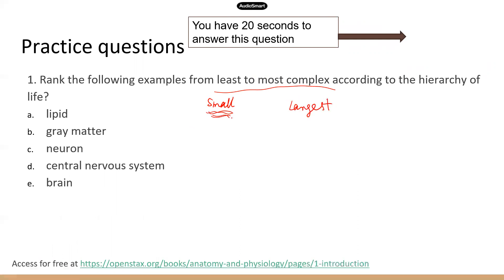The smallest component is going to be the macromolecules — the chemicals that make up things. Which of the following is an important macromolecule? That's the lipid, so A is going to be the first. Different macromolecules form cell parts, and cell parts form a cell. Which one is a cell? That's the nervous cell, so C is going to be the second.